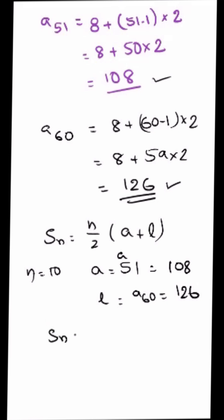Now substitute: S_n is equal to 10 by 2 into 108 plus 126, that's equal to 5 into 234, that's equal to 1170. So the final answer is 1170.